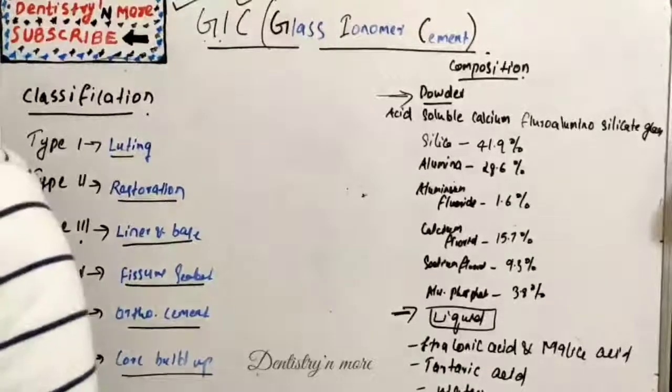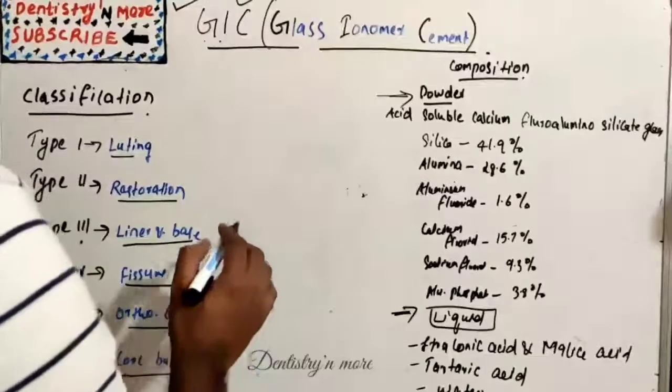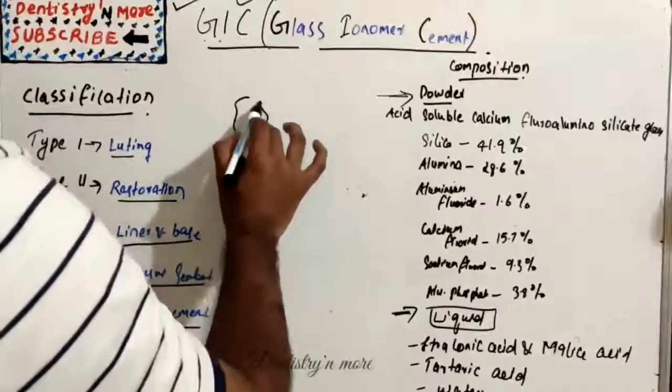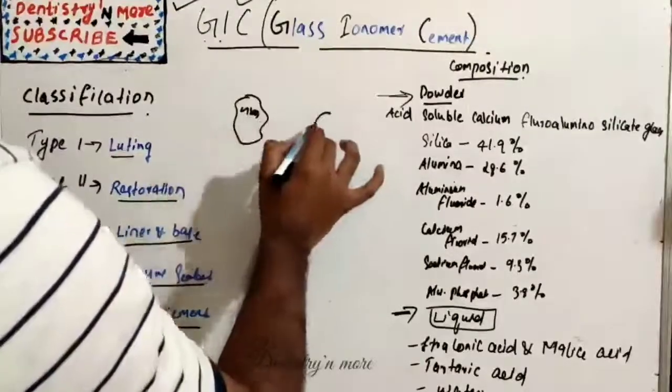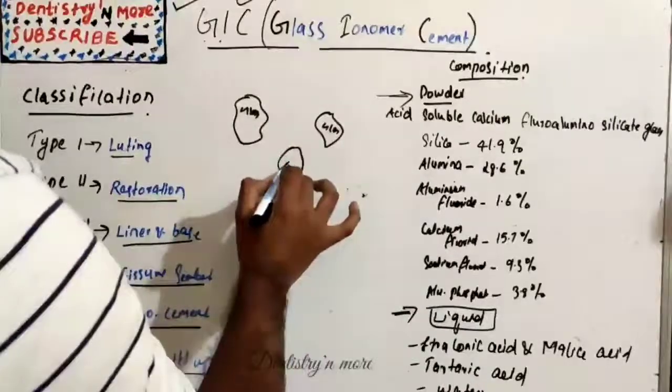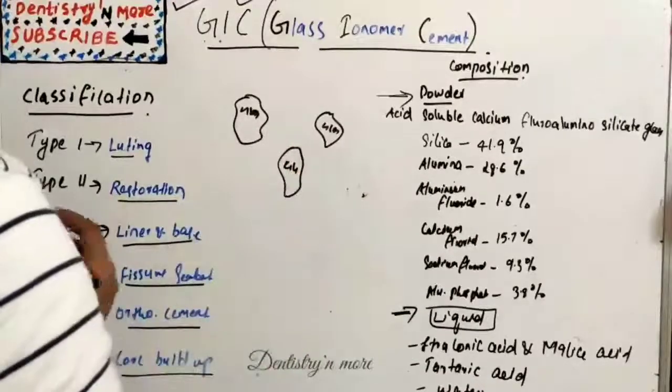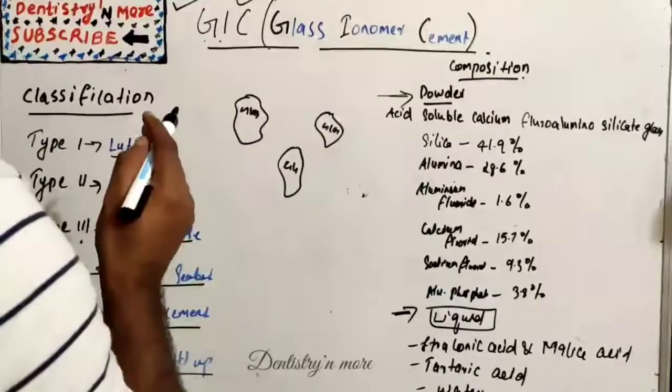The setting reaction: when we mix the powder and liquid, this is a glass particle, a silica glass particle. When the powder and liquid are mixed, the surface of the glass particles are attacked by acid.